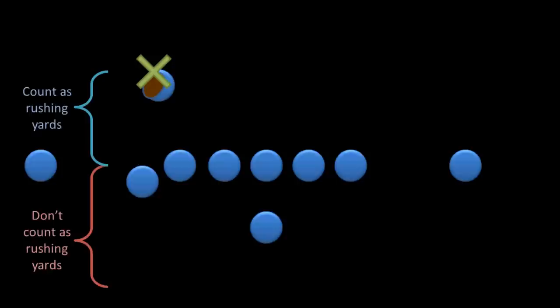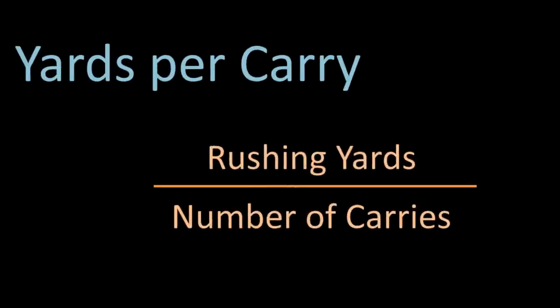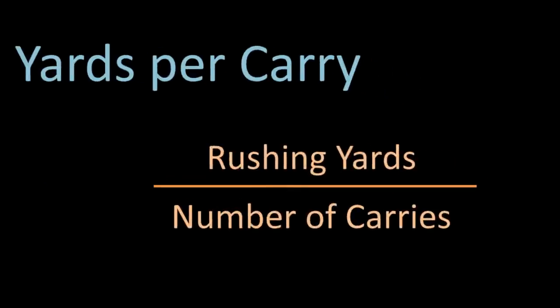That is, the 5 yards from the line of scrimmage forward. Something else to note here is that if a running back is to receive a handoff and then is tackled behind the line of scrimmage, he will be credited with negative rushing yards. A third stat for running backs is yards per carry, which is simply the number of rushing yards divided by the number of carries. Two halfbacks may have the same amount of rushing yards, but the player who did it in half of the rushing attempts, or half the number of carries, is obviously more impressive.